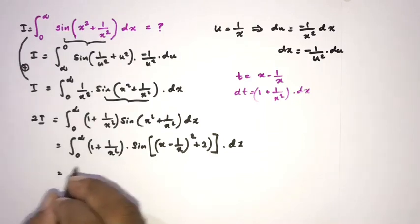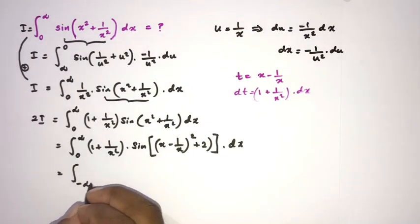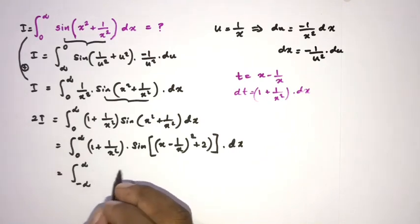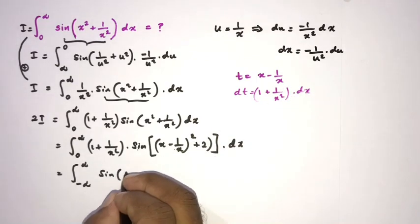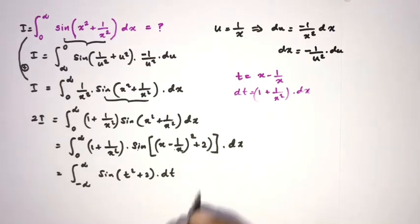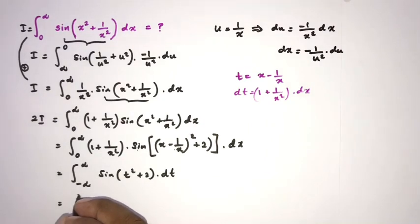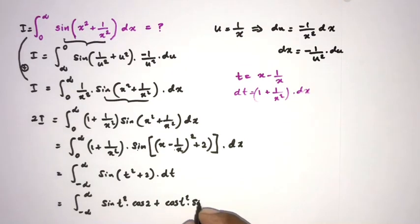The new limits are: when x approaches 0, t approaches −∞; when x approaches ∞, t approaches +∞. The integral becomes the integral from −∞ to ∞ of sine of (t² + 2) dt. Applying the sine angle addition formula: sine(t² + 2) = sine(t²)cos(2) + cos(t²)sin(2).